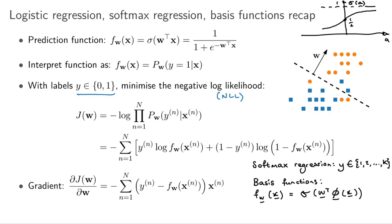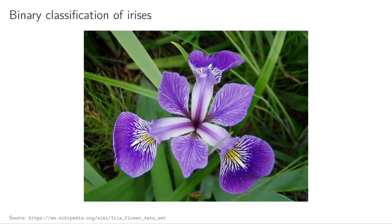Let's see how we can actually write that as a neural network. We're going to look at the example of classifying irises, specifically doing binary classification. You've seen this dataset before — it's a kind of standard and famous dataset.